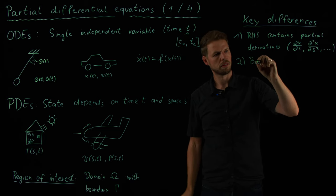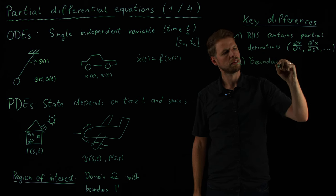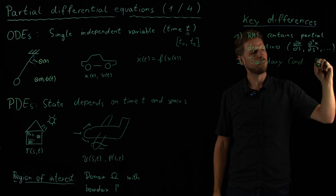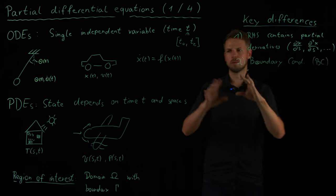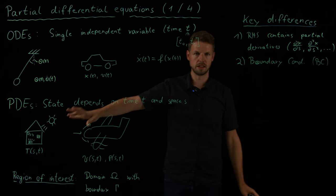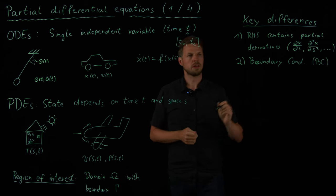Then the second thing is boundary conditions. I discussed this already, but this is really, really important, the boundary conditions. This is something we do not have in ODEs. Here, we have an initial condition, and we need this tool here, but we, in addition, have this boundary condition.